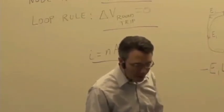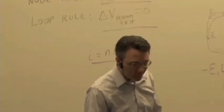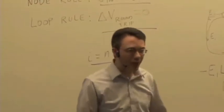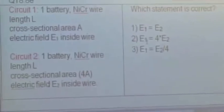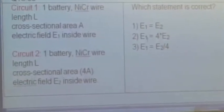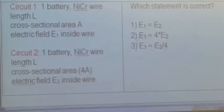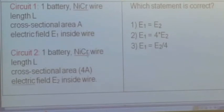Different situation now. Circuit number one has a single battery, nichrome wire of length L with cross-section A, and the electric field in that wire is E1. Our second circuit has the same type of battery, same EMF, same alloy (nichrome), same length, but now we're changing the cross-sectional area. How does the electric field in the first circuit compare to the electric field in the second circuit?